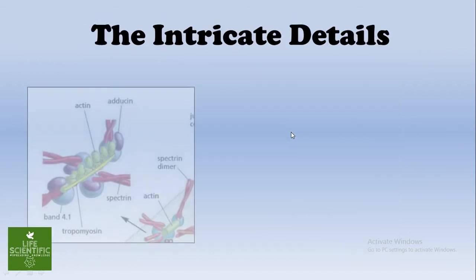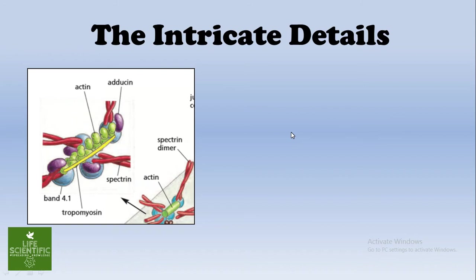The junctional complexes are composed of short actin filaments that are 13 monomers in length. They also involve other proteins like band 4.1, as marked in the figure, tropomyosin (the yellow one), and adducin (the purple one). These provide stability to the whole system.